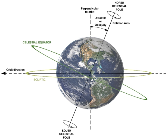For the past five million years, Earth's obliquity has varied between 22°2'33" and 24°30'16", with a mean period of 41,040 years.